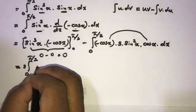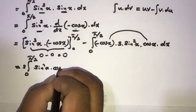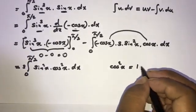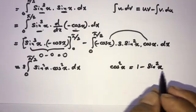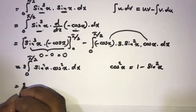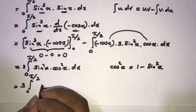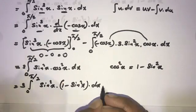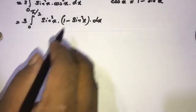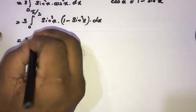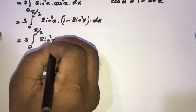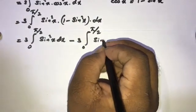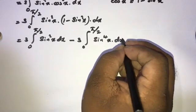Now, 3 is a constant so we can write 3 out front. We have cosine x times cosine x, which is cosine squared x. So we have sine squared x times cosine squared x dx. Using the identity cosine squared x = 1 − sine squared x, we can write the integral from 0 to 5π/2 of sine squared x times (1 − sine squared x) dx. Multiplying through gives the integral from 0 to 5π/2 of sine squared x dx minus 3 times the integral from 0 to 5π/2 of sine to the 4th power x dx.